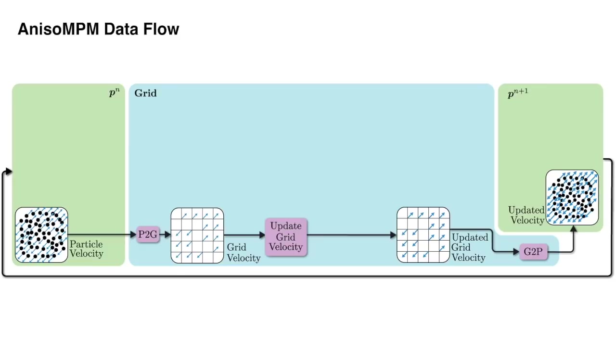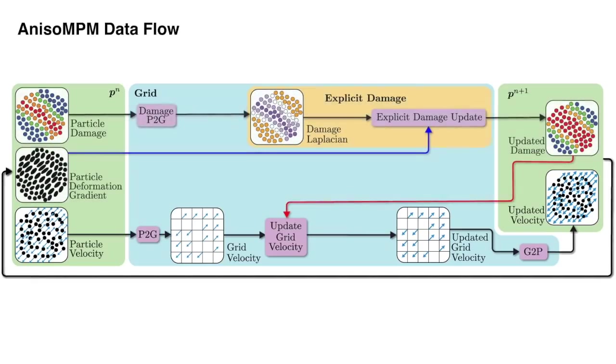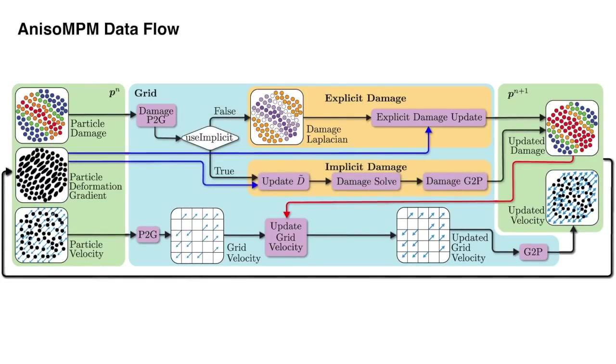However, AnisoMPM utilizes a staggered integration scheme and is comprised of two data pipelines, one for momentum and one for damage. Note that our damage pipeline uses the current particle deformation gradients to update damage, and then the damage is used to update grid velocity through the constitutive coupling. We also present a method for evolving damage using implicit time integration using a similar data flow.